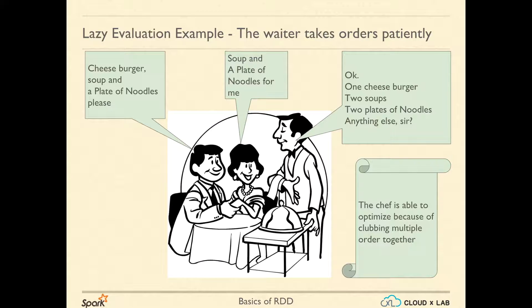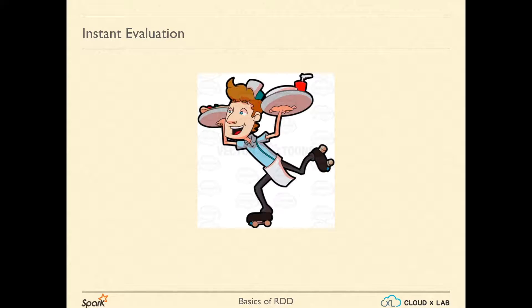All of the orders from your table were taken before cooking started. Imagine what would have happened if the waiter was very prompt. You would ask for a cheeseburger, the waiter would just run to the kitchen saying, let me get you a cheeseburger, I will be right back.